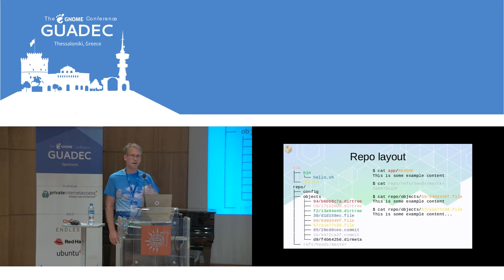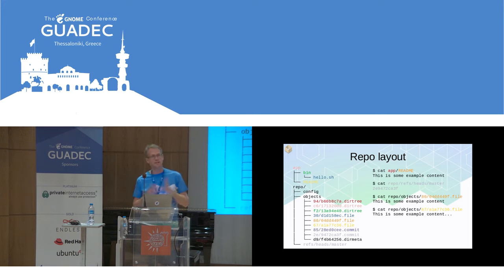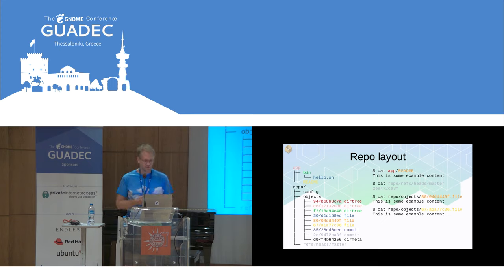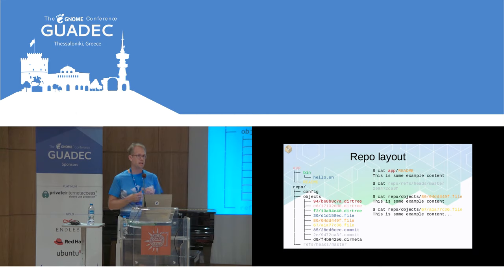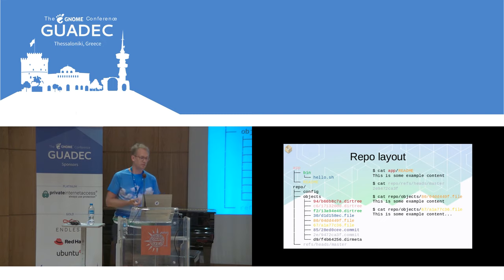We can follow the ref file and find all the files that are part of the current commit. There's also a parent pointer in the commit object, so we can find the entire history. The reason we reuse things if they're the same is because the object identifiers aren't actually random — they're checksums of the content. For dirtrees it's a checksum of the file list, and for regular files the checksum includes things like UID, GID, permissions, and type of file, so if any of those change it's a different object.